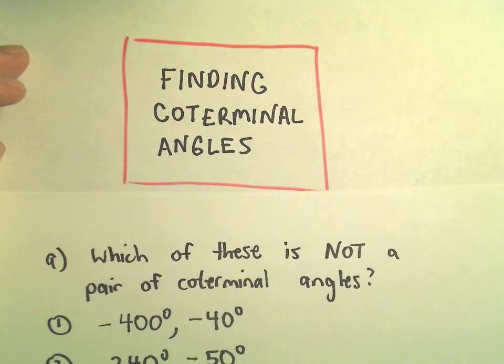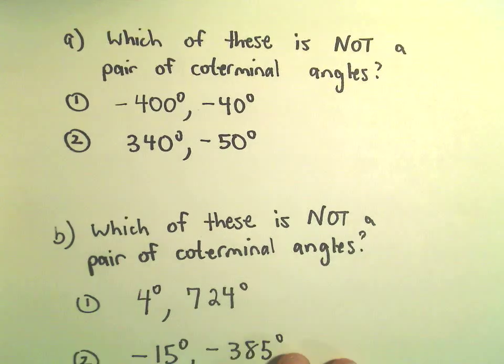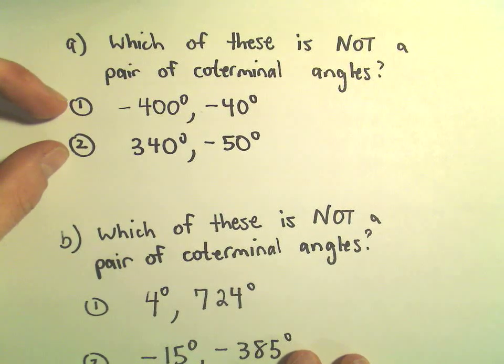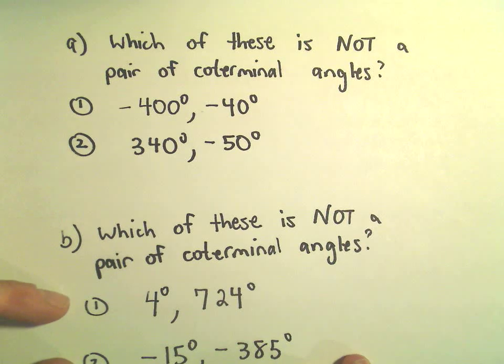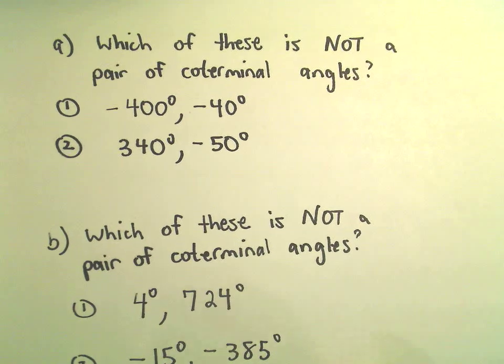Alright, so just some more examples here about finding coterminal angles. We've got two questions. In part A, we want to figure out which of these pairs are not coterminal. Same thing for part B - which one of these pairs of angles are not coterminal.